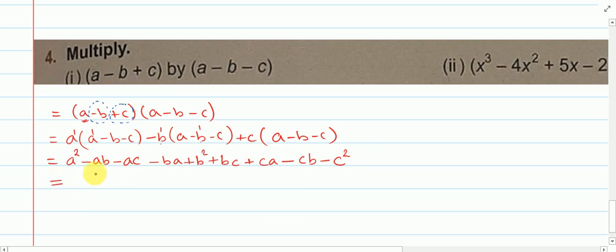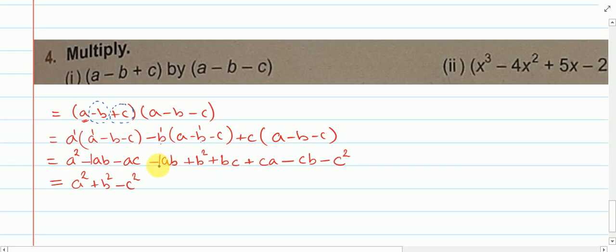Now let us collect like terms. We have a square, plus b square, minus c square. Here we see ab and ba — ba can be written as ab. So we have minus ab and minus ab: both have minus sign, so we add the coefficients: 1 plus 1 gives 2, and the result is minus 2ab.